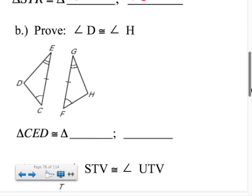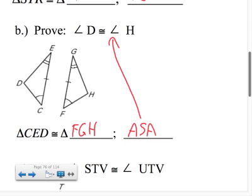Part B, no different. We're going to prove first that triangle CED is congruent to triangle FGH, and we know that because of the angle-side-angle shortcut. Once I know that, now I can say angle D and angle H are congruent because of CPCF.